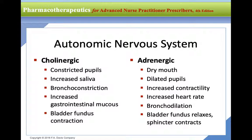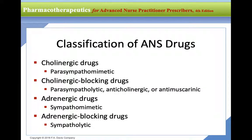The adrenergic system produces dry mouth, dilated pupils, increased contractility, increased heart rate, bronchodilation, bladder fundus relaxation, and sphincter contraction. Overall, we have cholinergic drugs (parasympathomimetic), cholinergic blocking drugs (anti-muscarinic or anticholinergic), and adrenergic and adrenergic blocking drugs.